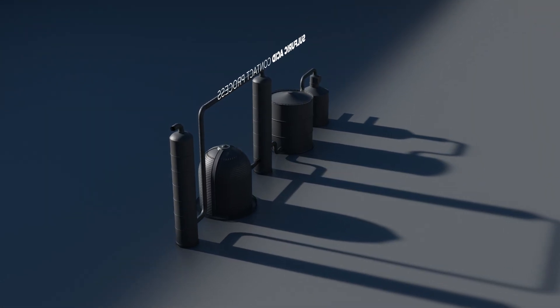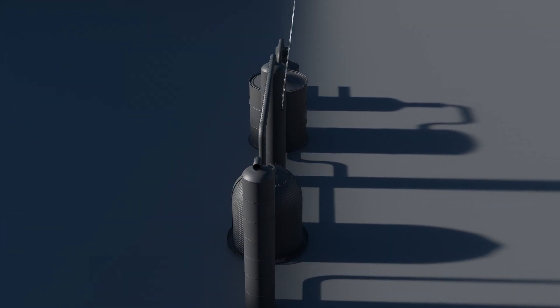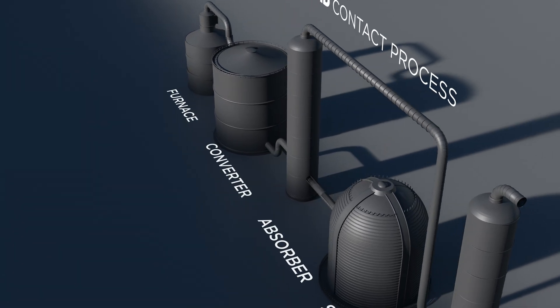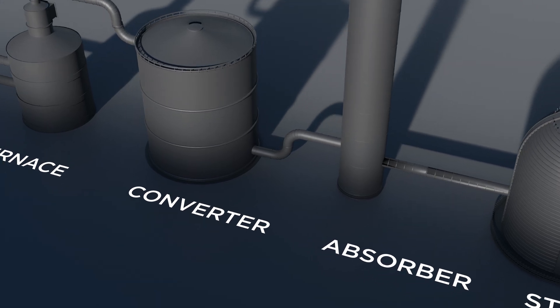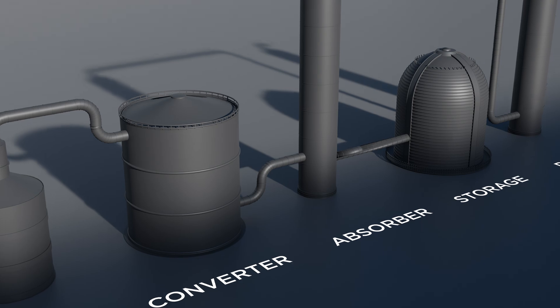The contact process is a chemical industry process to produce sulfuric acid. It was patented by the British vinegar merchant Peregrine Phillips in 1831. Its advantage is to produce sulfuric acid in high concentrations, above 98%, and for this reason is the most widely used process worldwide.